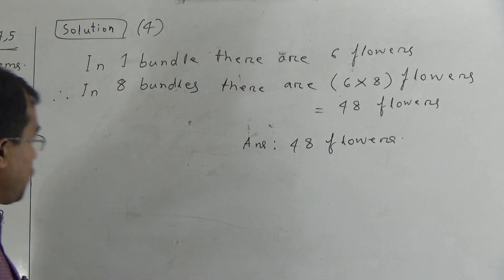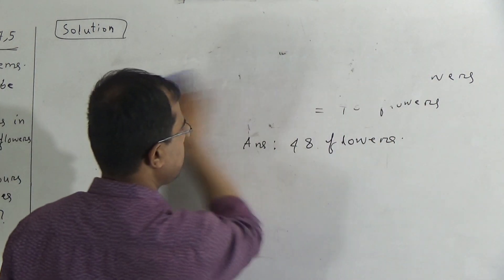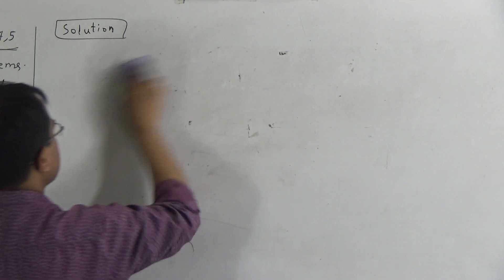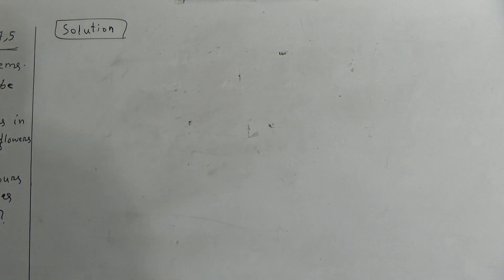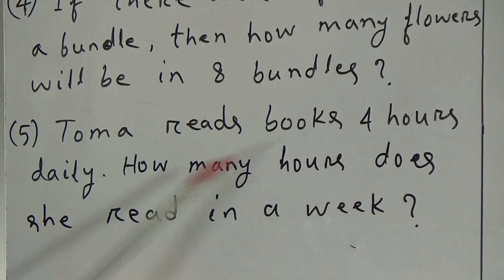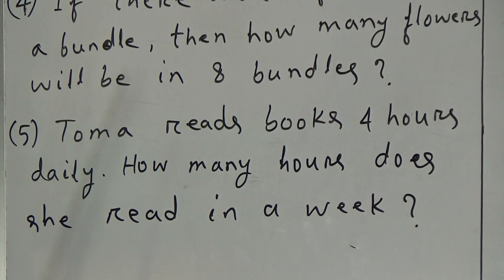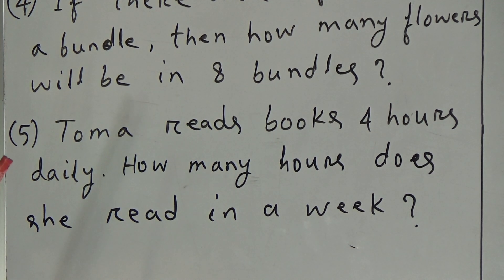Dear students, I hope you have understood it. Now we will solve question number five. The question is: Toma reads books 4 hours daily. How many hours does she read in a week? We know that 1 week is equal to 7 days. That means we have to find out how many hours she reads in 7 days.